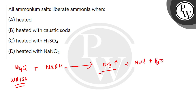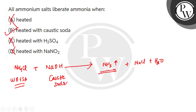So ammonia can be smelled when we heat the ammonium salt with caustic soda. So option B is correct and the rest of the options will be incorrect. I hope you understood. Thank you.